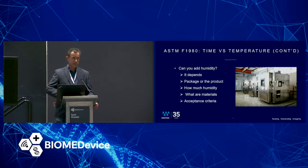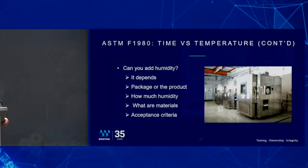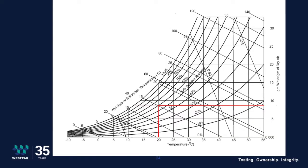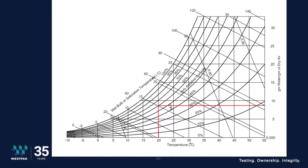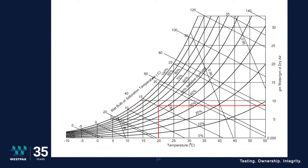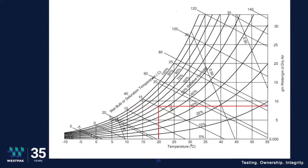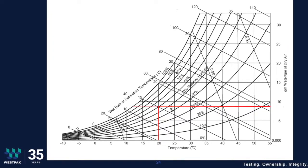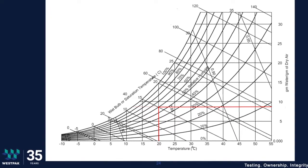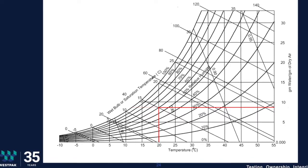If we do want to add humidity into the equation, how much humidity? And what should our acceptance criteria be? Let's take a look at what humidity might look like. This is a basic psychrometric chart. It illustrates the dry bulb temperature on the x-axis and the wet bulb temperature, which is used to measure relative humidity. On the far right y-axis, we have a ratio of grams of water per gram of dry air. In the middle, we have lines sweeping up from 10, 20, 30, 40, 50, all the way to 100% relative humidity.